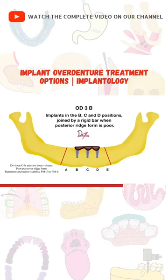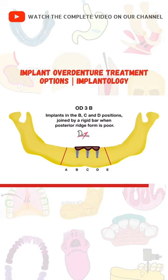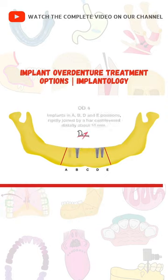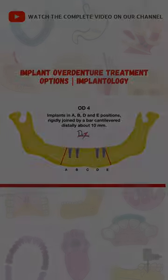So OD3a was when the posterior ridge form was good, but OD3b was when the posterior ridge form is poor. Then we come to OD4, as you can see, we have...